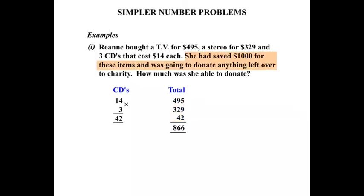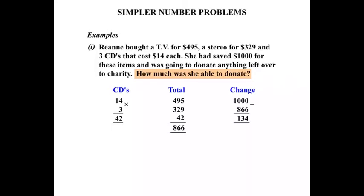She had saved $1,000 and was going to donate anything left over to charity. So we need to work out the change she's going to get back from the $1,000. She's spending $866, so we do the subtraction: $1,000 take away $866, and calculating that we come up with $134. So Rhianne was able to give $134 to charity.